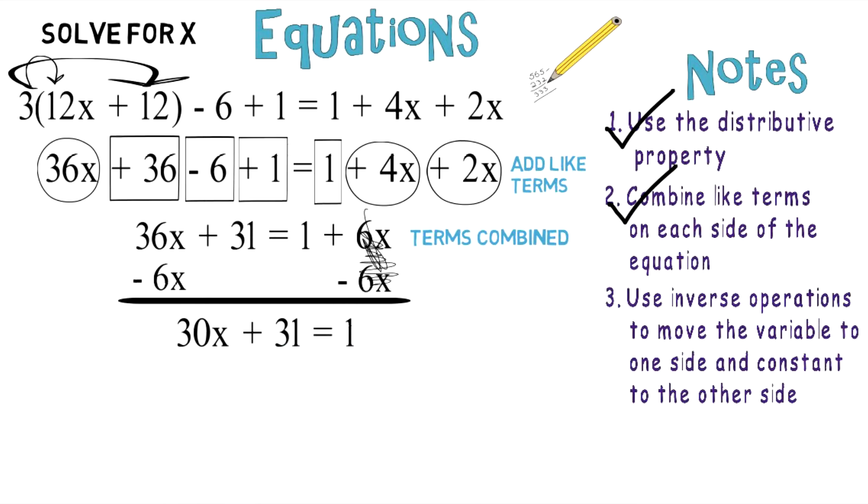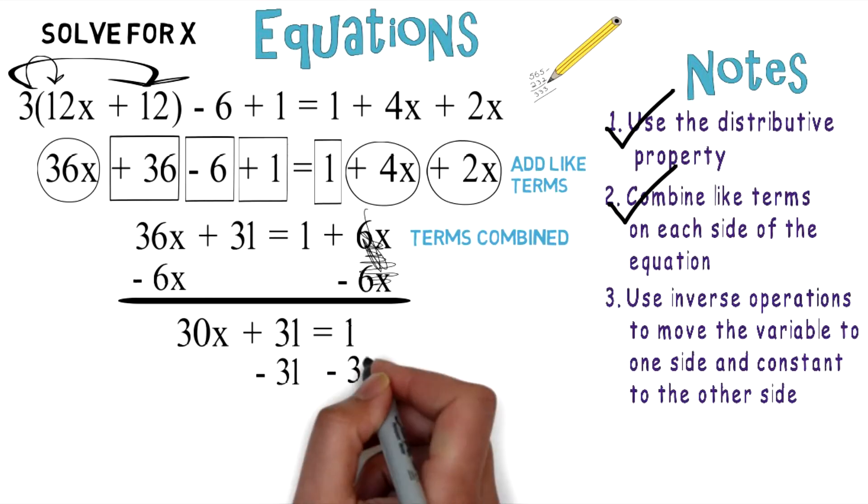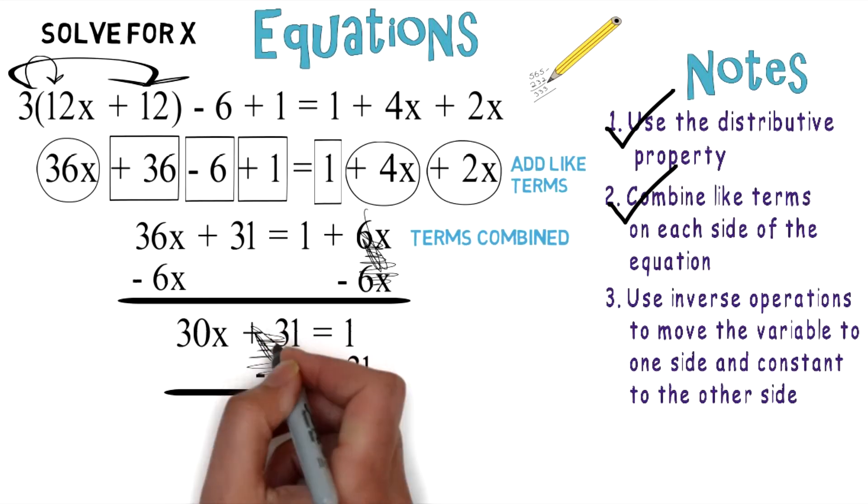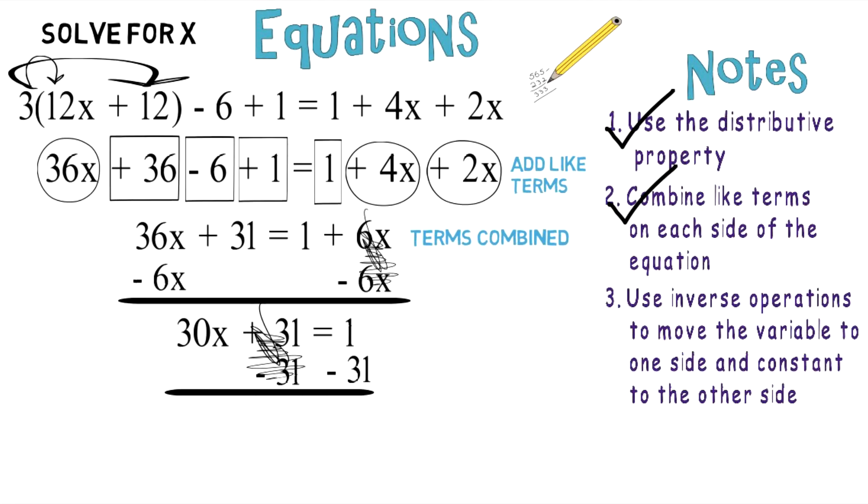Again, you want to isolate x, so you're going to subtract 31 from both sides of the equation. The positive 31 and negative 31 cancel each other out, and you're left with 30x = -30.